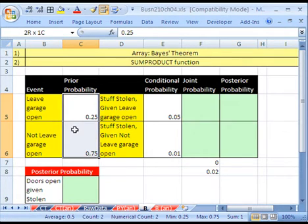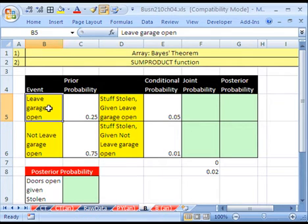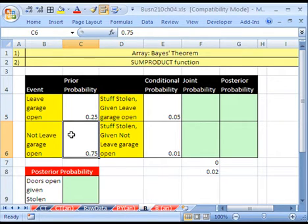Now, prior probabilities, or marginal probabilities, as we saw in our joint probability table, we have two events. You either leave the garage door open, or you don't leave it open. This is in a particular neighborhood. Here's the probability you leave it open. Here's the probability you don't leave it open, or not, or close.